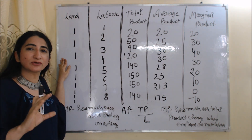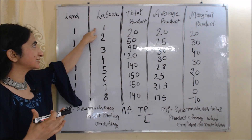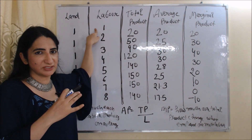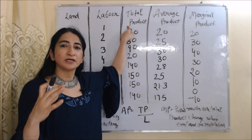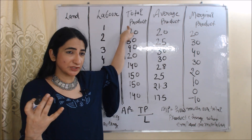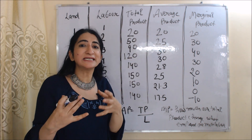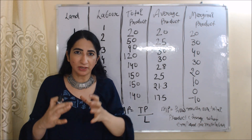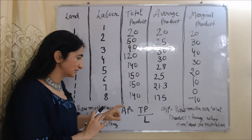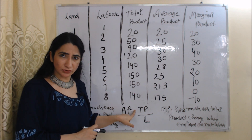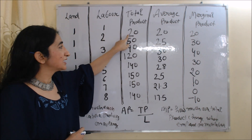Now let's look at the table for this law. In the first column we have land — land is our fixed factor, so it remains constant throughout. In the second column we have labor — labor is the variable factor, so it changes. In the third column we have total product, meaning our total output. In the next column we have average product, which measures how much each labor produces on average. The formula is: AP = TP ÷ L, where TP is total product and L is number of laborers.